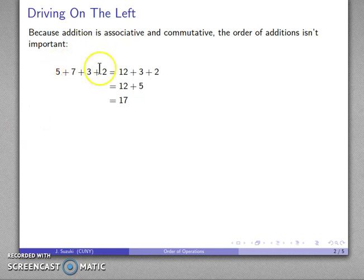I'm using associativity of addition to take any two terms I want to add together. Because addition is associative and commutative, it doesn't make a difference. Maybe I'll add 7 plus 3 to get 10, then add 10 and 5 to get 15 and 17. No matter how I add, I get the same answer.